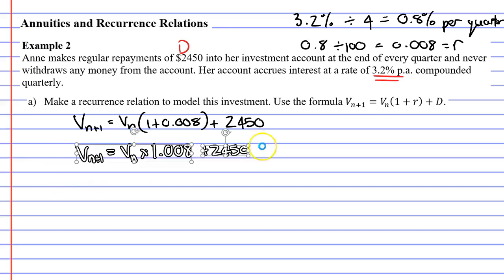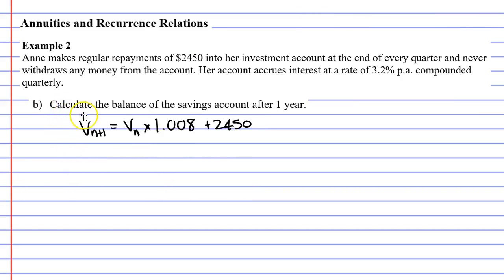We're going to use this formula in question B. It's asking us to calculate the balance of the savings account after one year. We need to remember that our repayments are done quarterly. How many quarters are in a year? There's four of them. So four quarters. Let's start with V0. How much money do we have in our investment account when zero quarters have passed? Well, when you read the question, it doesn't talk about an amount of money that we started with. So I'm going to assume that we started with nothing. We started with zero dollars.